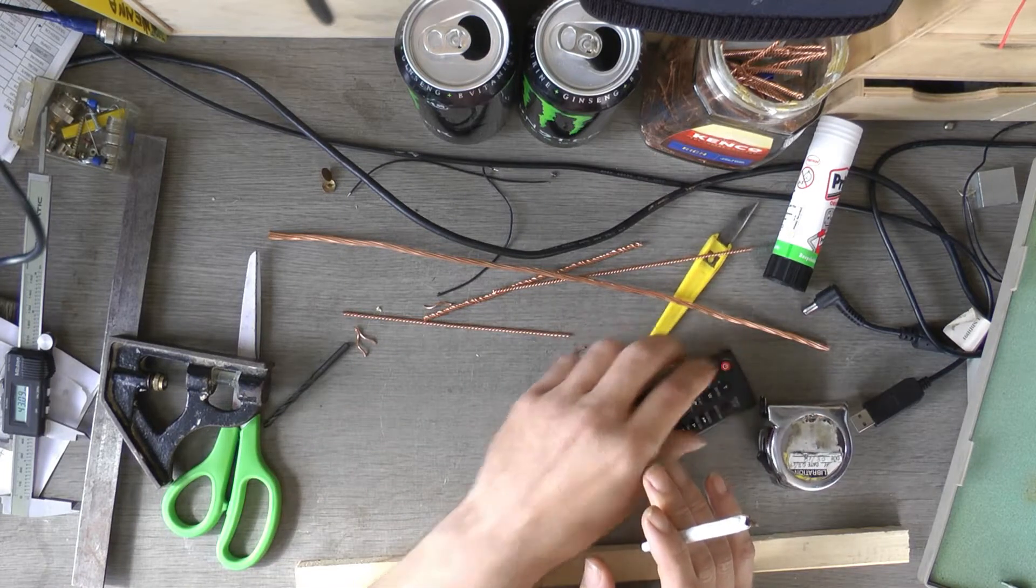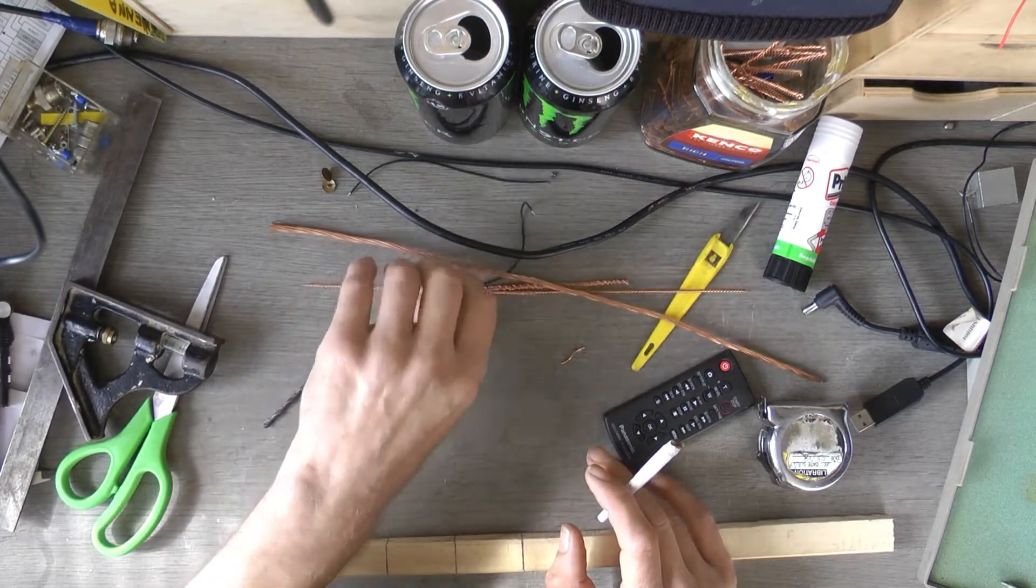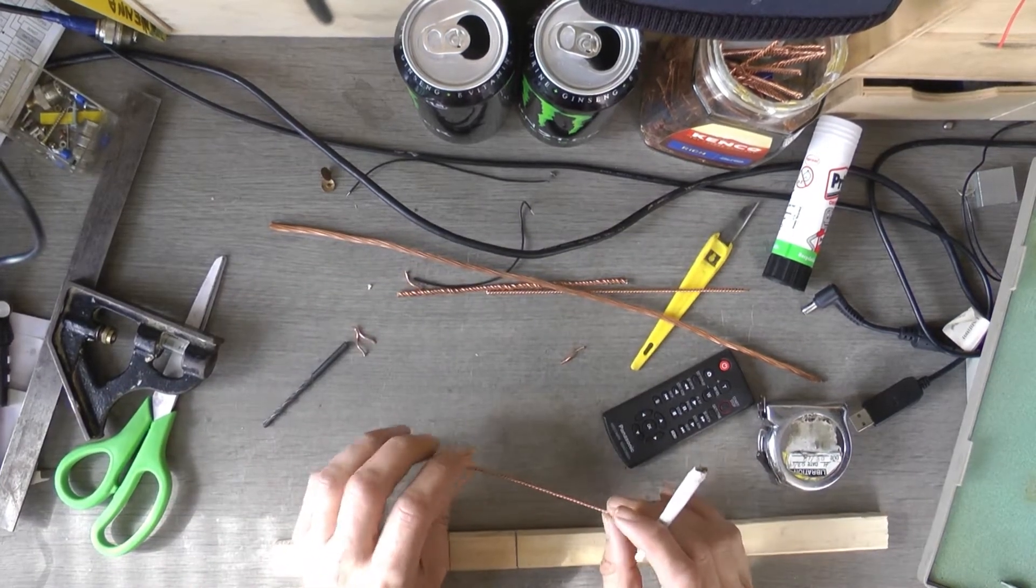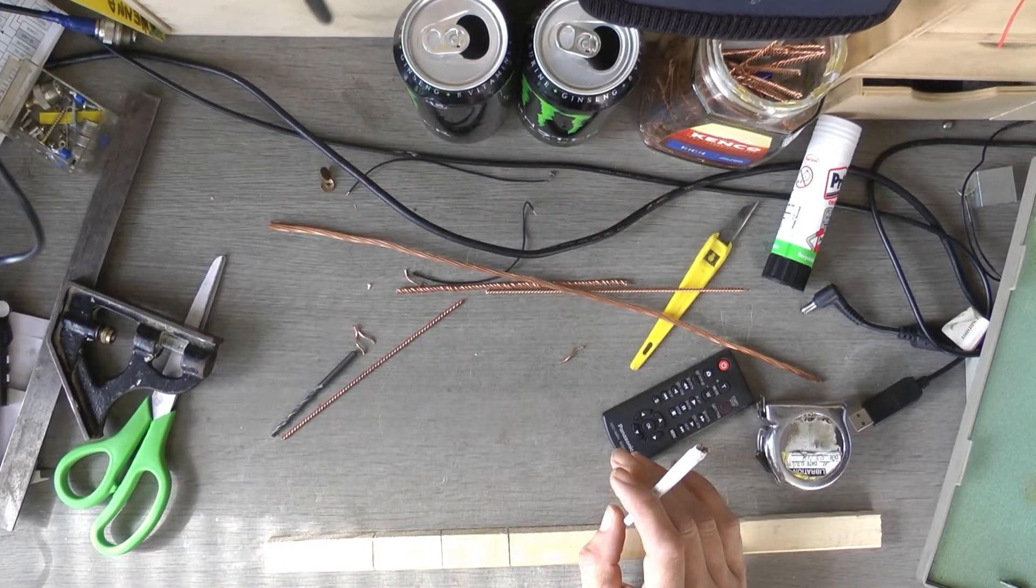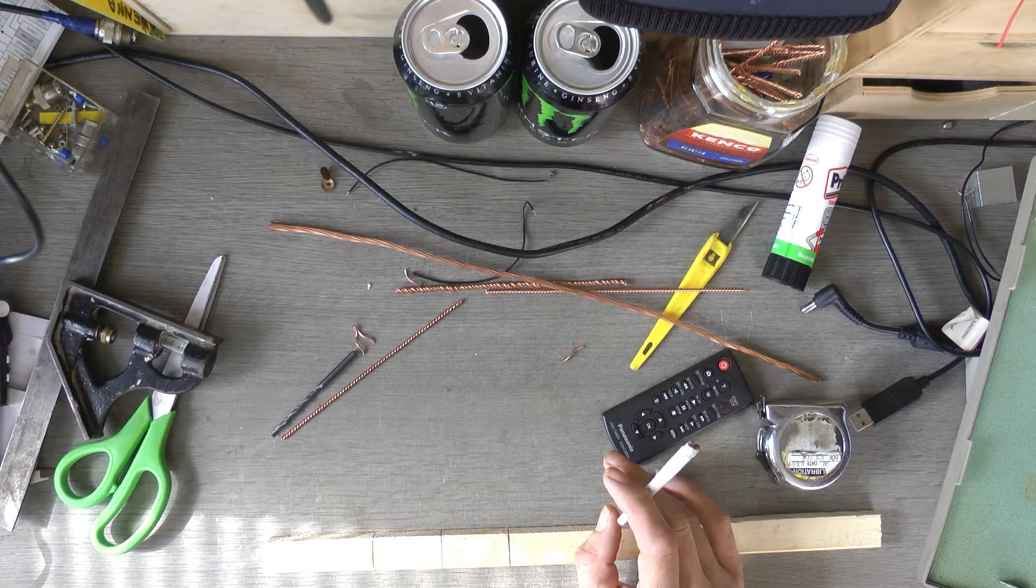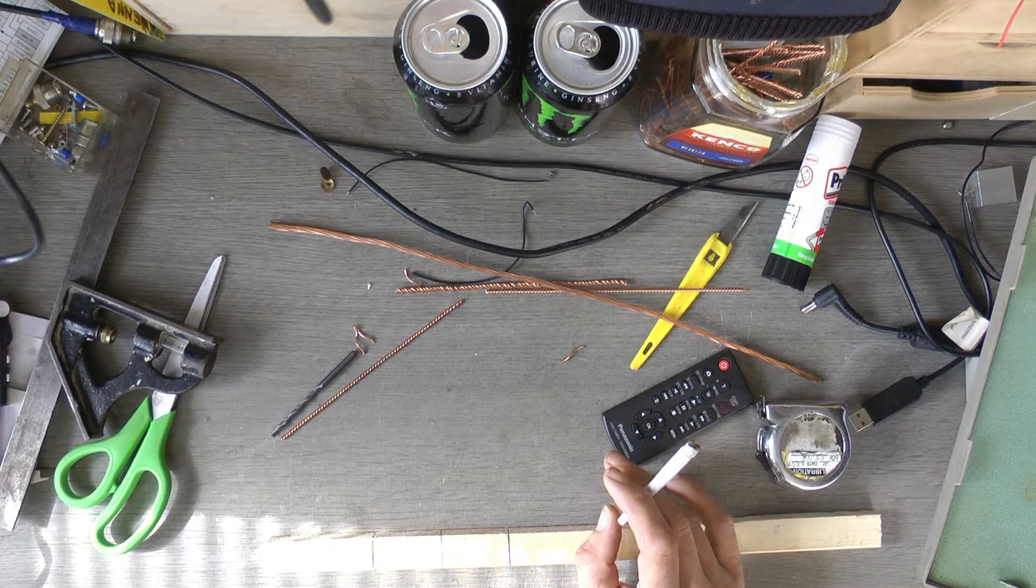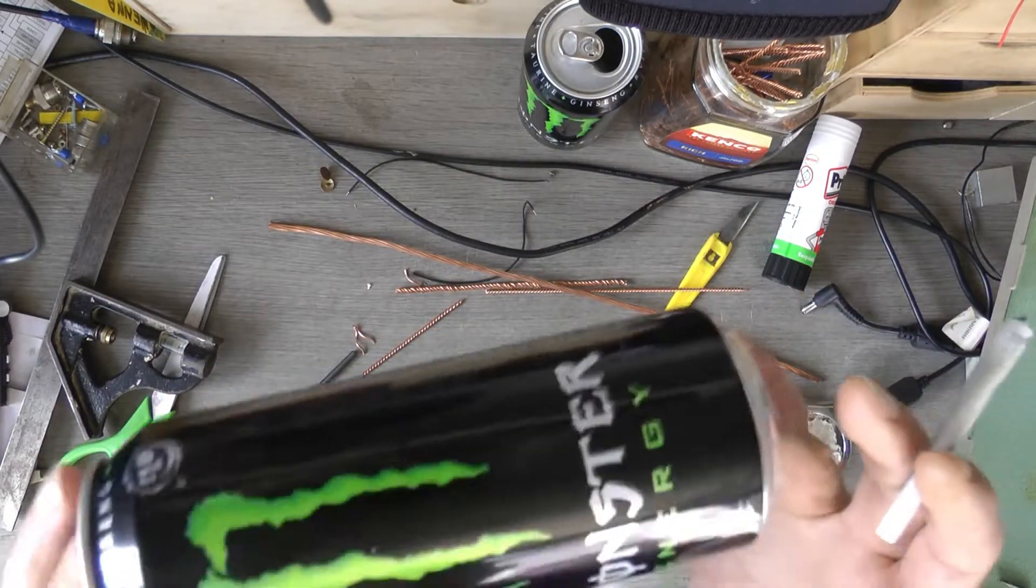Hello YouTubers. Today I'm going to show you how to build an antenna for 868MHz for Meshtastic. I'm going to be using these Monster energy drink cans of aluminum.